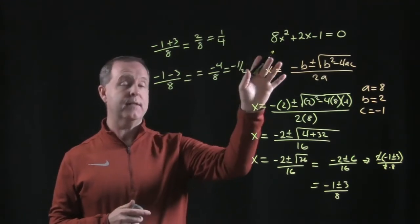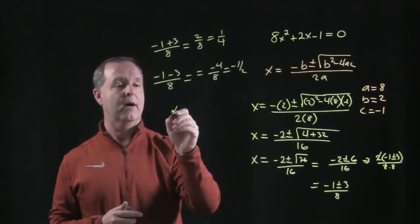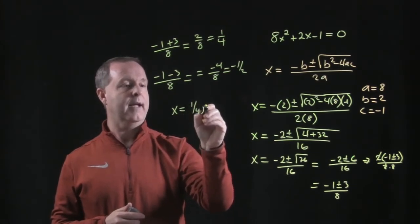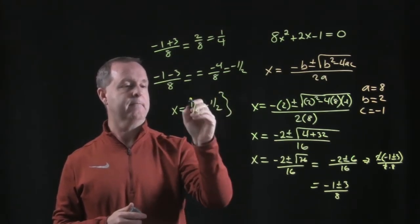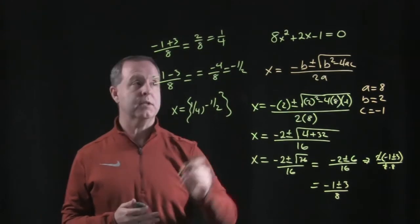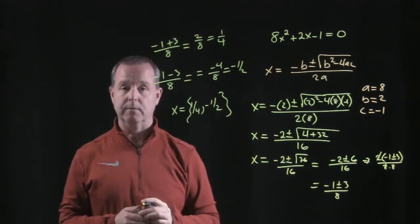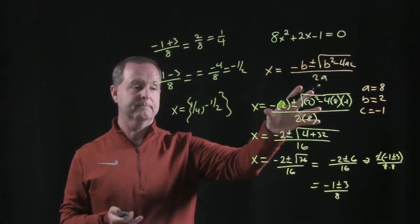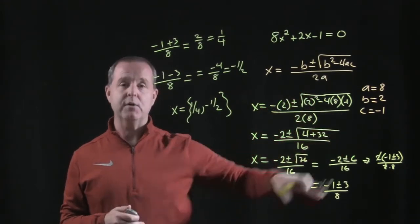So my two solutions for this quadratic equation are x, x is equaling 1 fourth, and negative 1 half. Those are the two solutions that make this equation true. And we solved it by using the quadratic expression, plugged in our values and simplified.